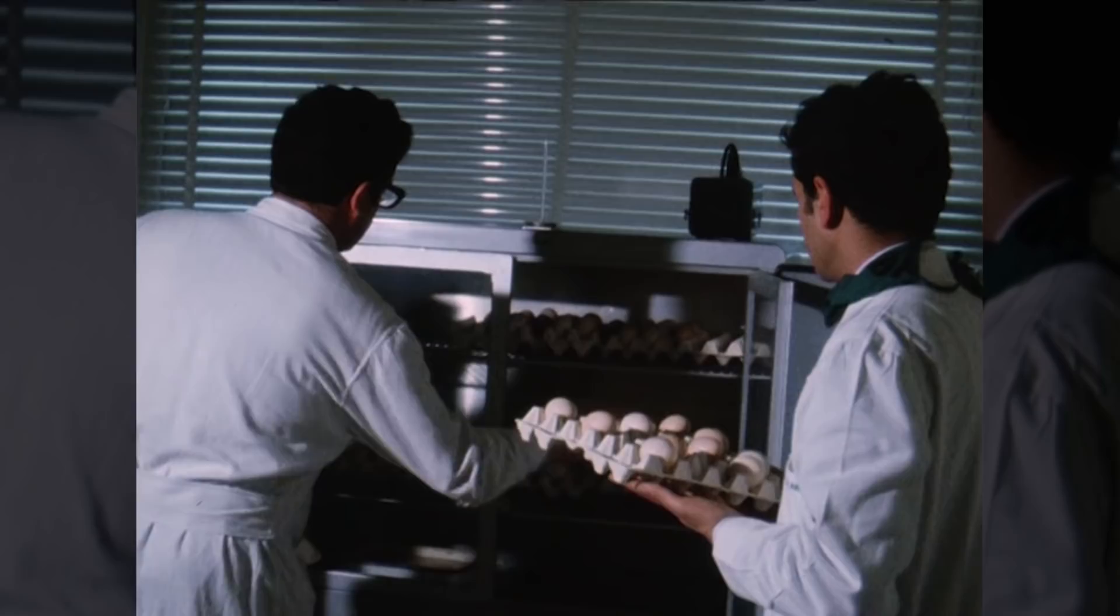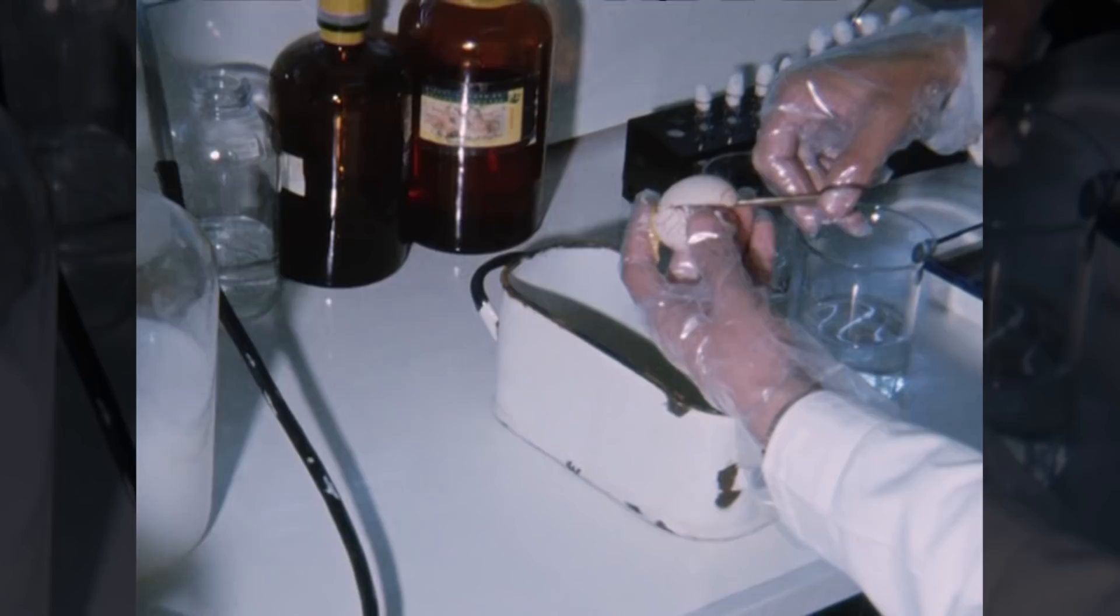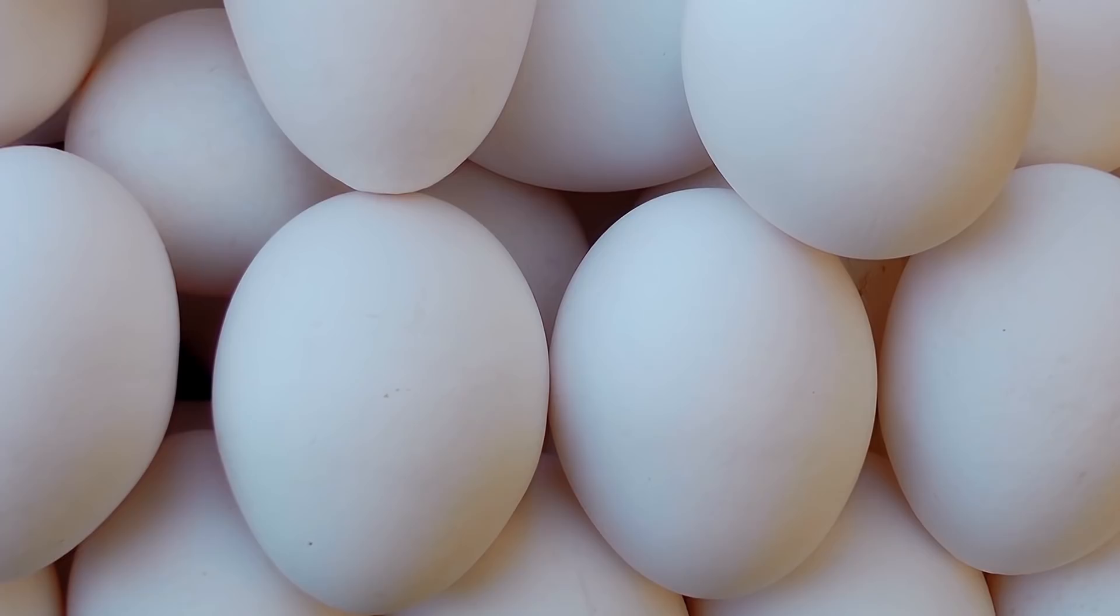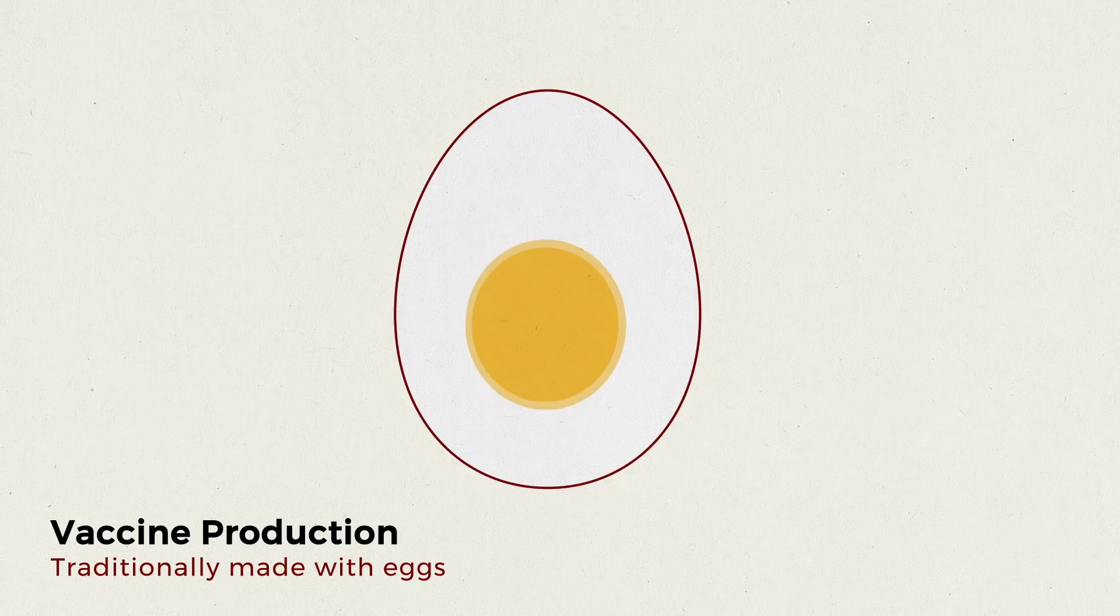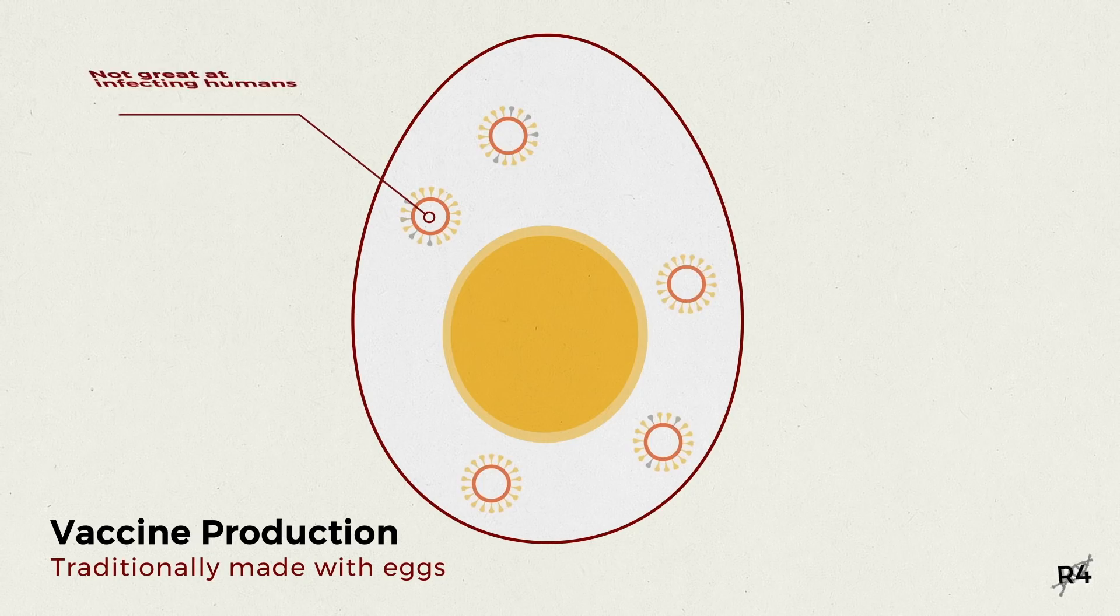For inactivated influenza vaccines, the viruses are then killed, and the virus antigen is purified. For live attenuated vaccines, the process is even more involved. They have to be modified to no longer be infectious to humans, but remain similar enough to the original virus to produce an immune response. This is done by allowing the virus to mutate over time inside the chick cells. It slowly becomes more adapted to infect chicken cells, and less adapted to infect human cells.